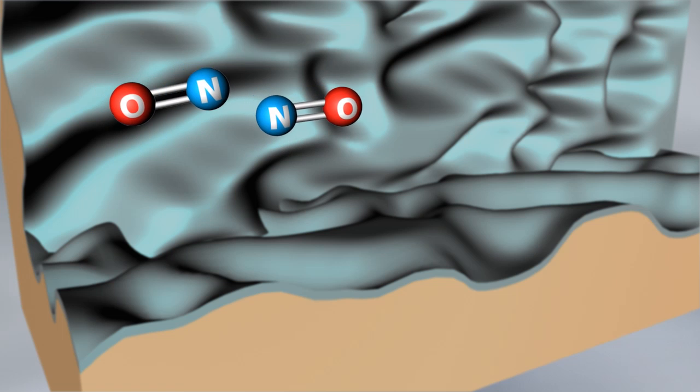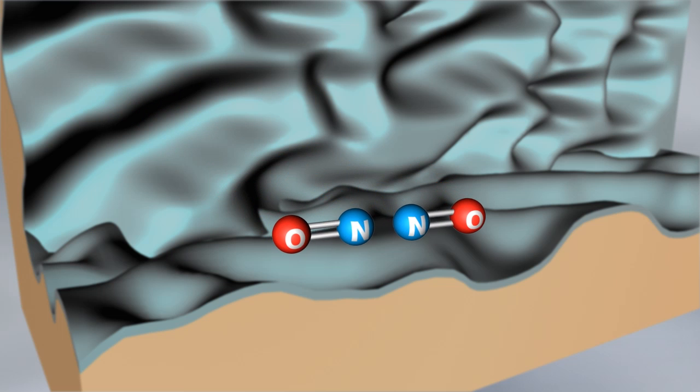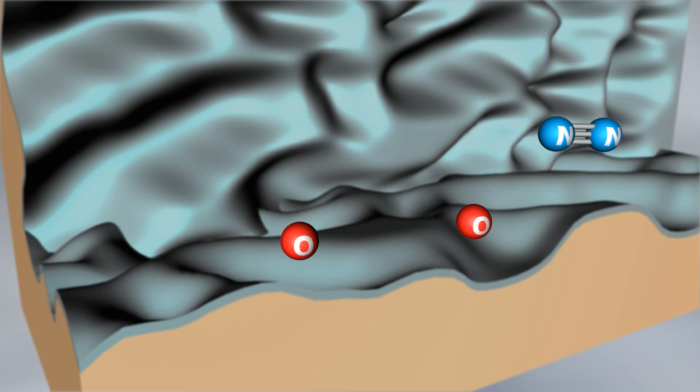Nitrogen oxides are converted to nitrogen and carbon dioxide on the catalyst's surface with the aid of carbon monoxide.